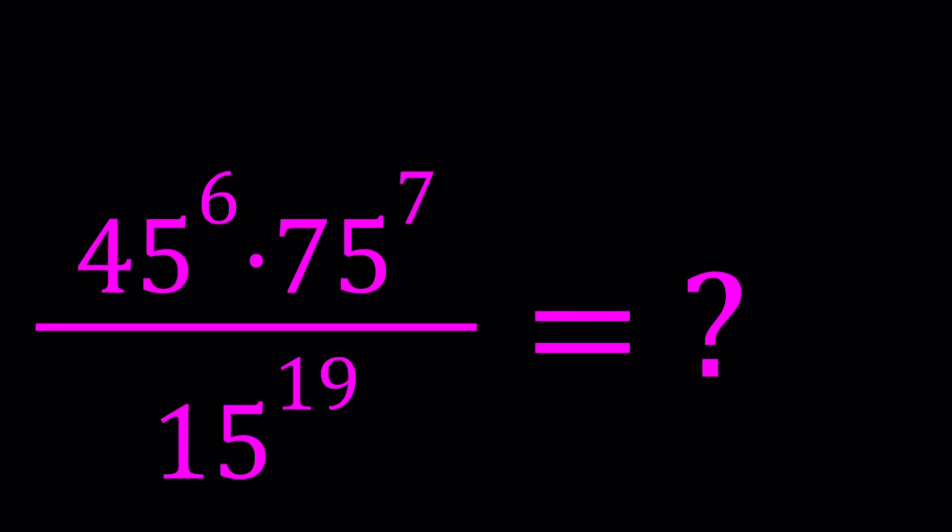Hello everyone, in this video we're going to be simplifying a numerical expression. We have 45 to the power 6 times 75 to the power 7 all over 15 to the power 19.